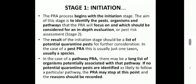Stage one, initiation, in detail: PRA begins with this stage. The main aim is to identify the pest or organism identified earlier. In a pest PRA, we must include a list of potential quarantine pests, and it usually covers just one taxon or species. In a pathway PRA, there may be a long list of organisms associated with that pathway. If no potential quarantine pest is identified in the area or pathway, then we can stop the PRA and should record the reasons.